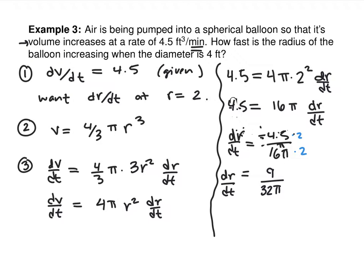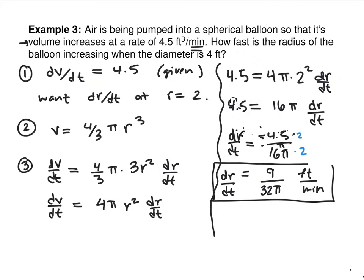What are the units on this going to be? R is radius, measured in feet because the volume was measured in cubic feet. The time was measured in minutes. So the radius is increasing at 9 over 32 pi feet per minute.